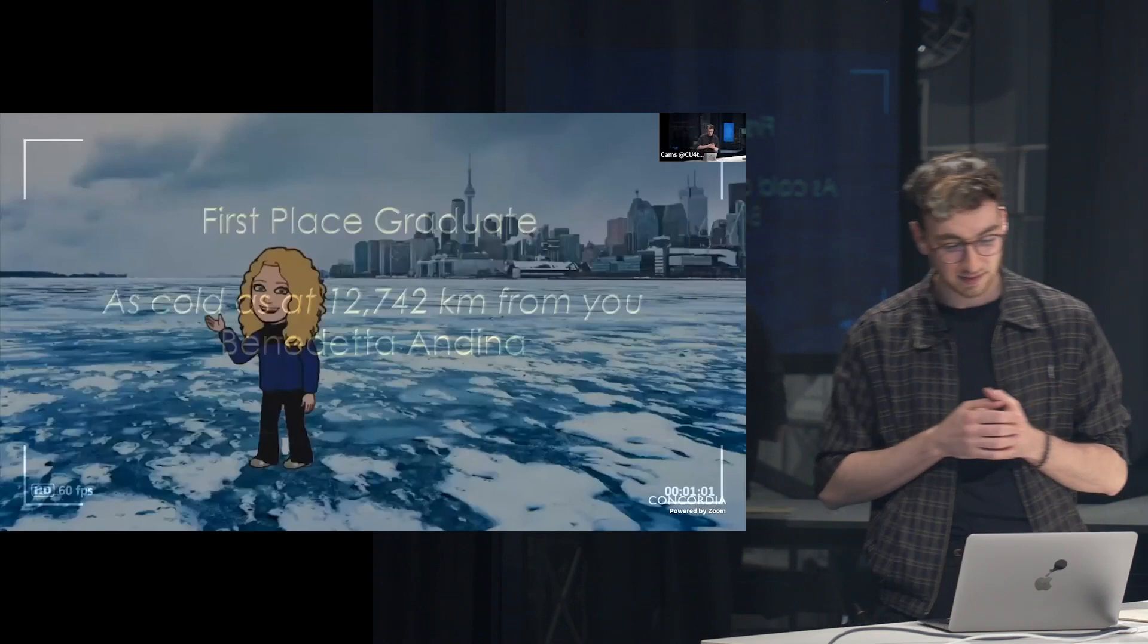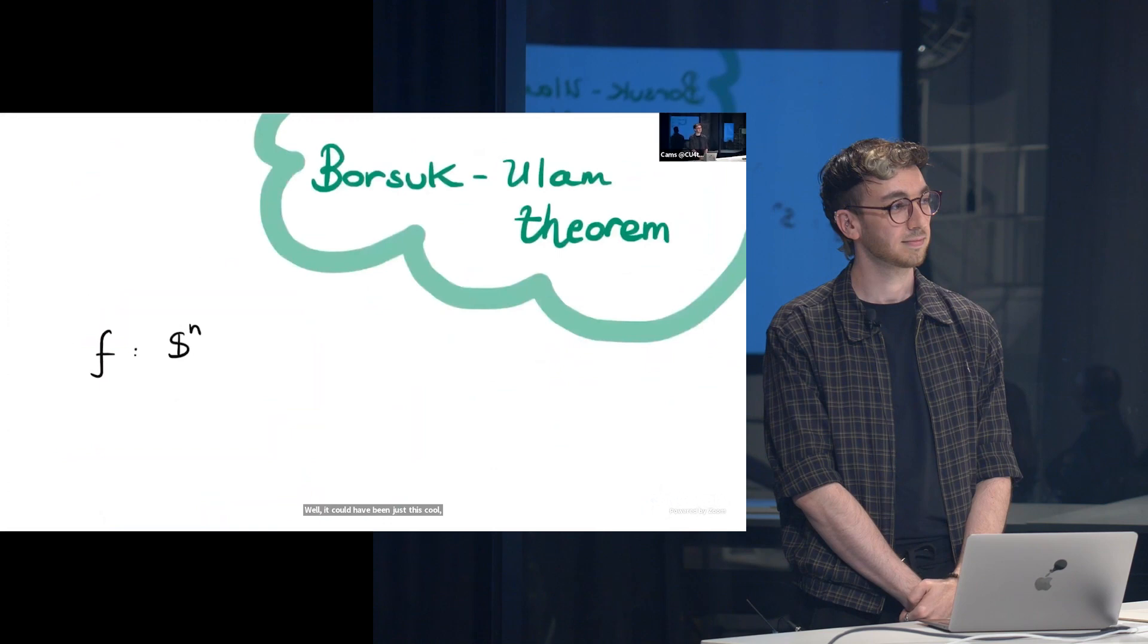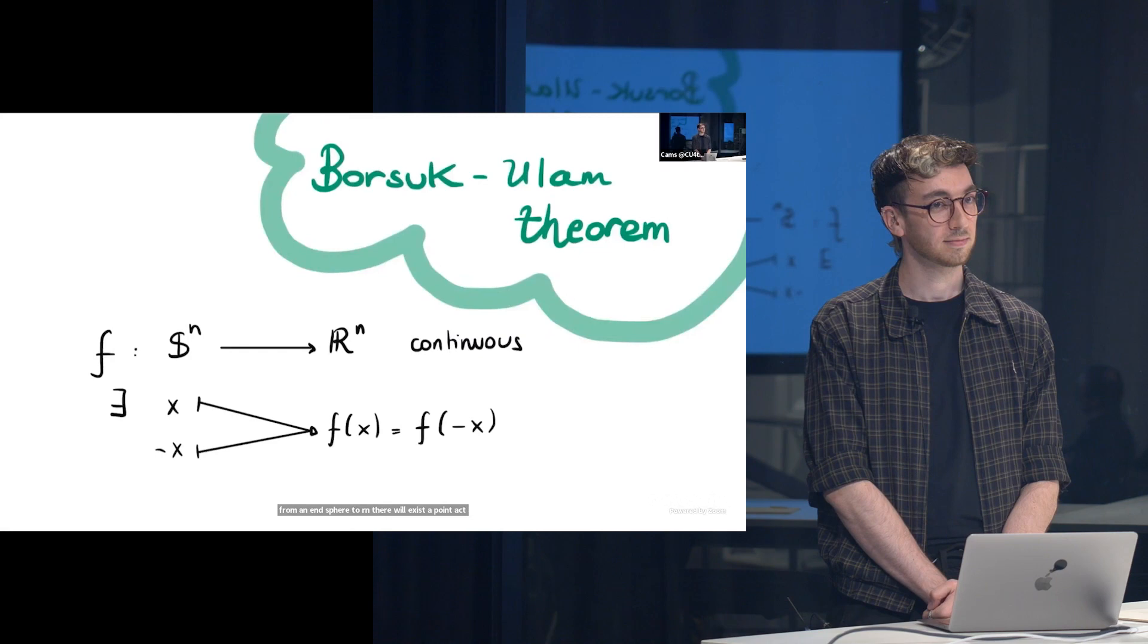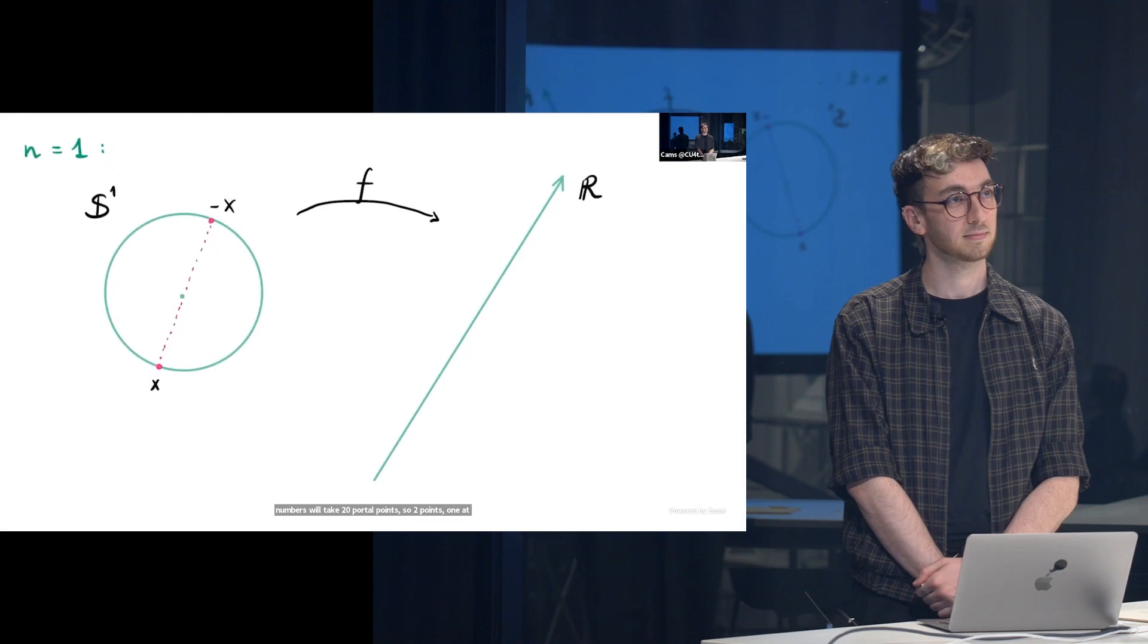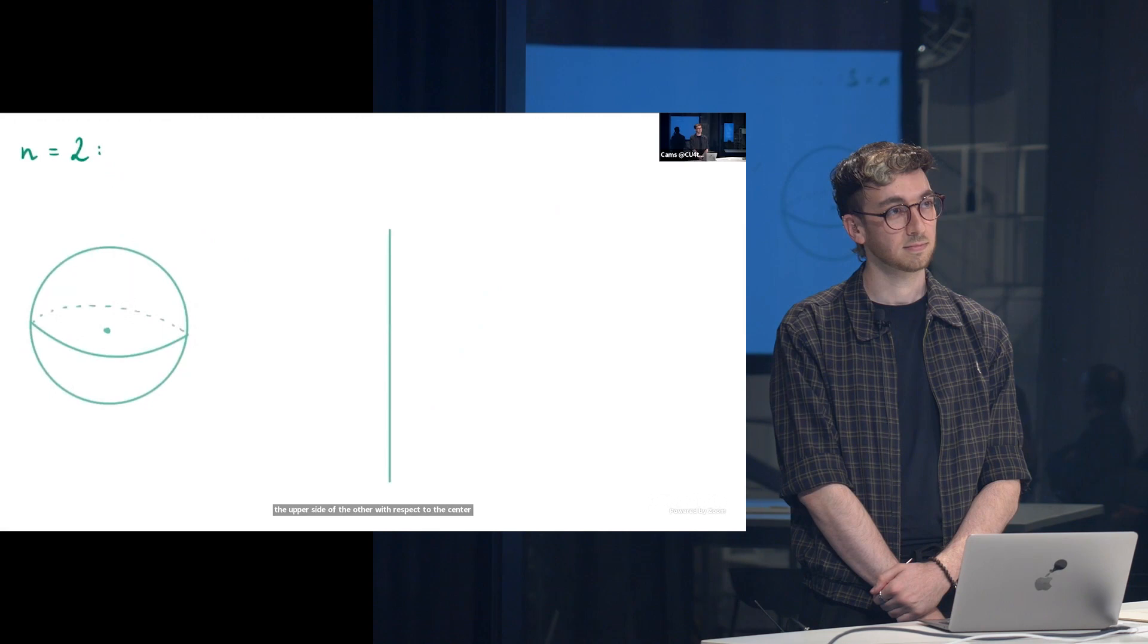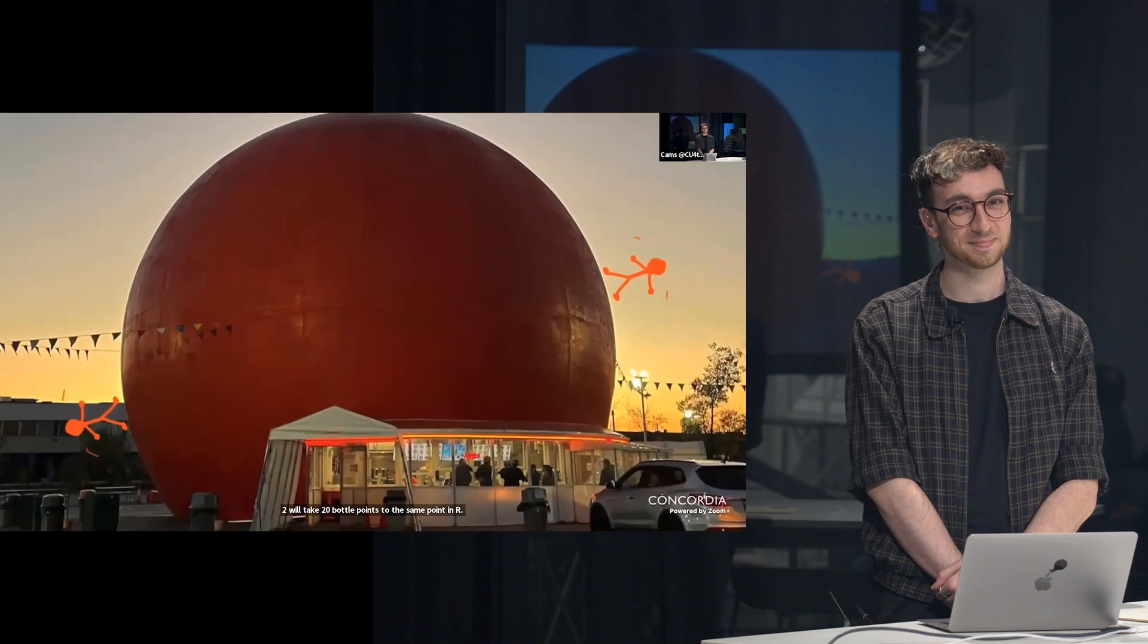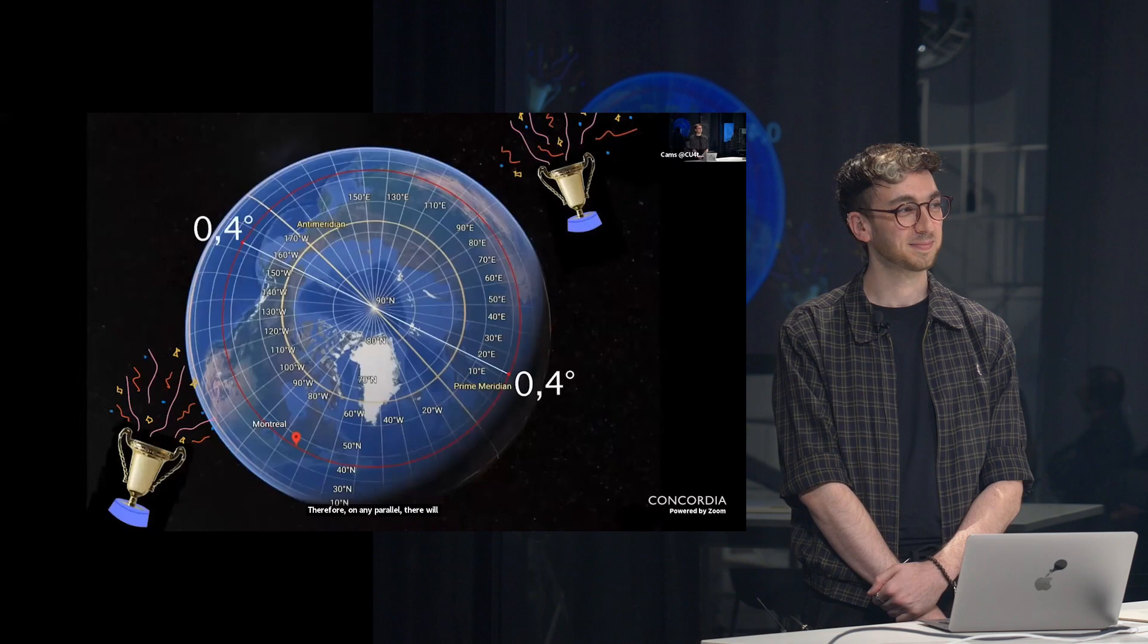Were you ever so cold that you wished to be at the other end of the world? Well it could have been just as cold there. Indeed, there's this theory in mathematics called the Borsuk-Ulam theorem that states that for any continuous function from an n-sphere to R^n, there will exist a point x such that f(x) equals f(-x). For the case n equals 1, this means that a function from the circle to the real numbers will take two antipodal points—two points one at the opposite side of the other with respect to the center of the circle—to the same value in R. For n equals 2, a continuous function from the sphere to R^2 will take two antipodal points to the same point in R^2, and so on. For example, we can take the elasticity of a point of the circle as our function, or the thickness of a ring, or the temperature on a parallel of the earth. Therefore on any parallel, there will be two people at opposite sides of the world feeling the same cold weather.